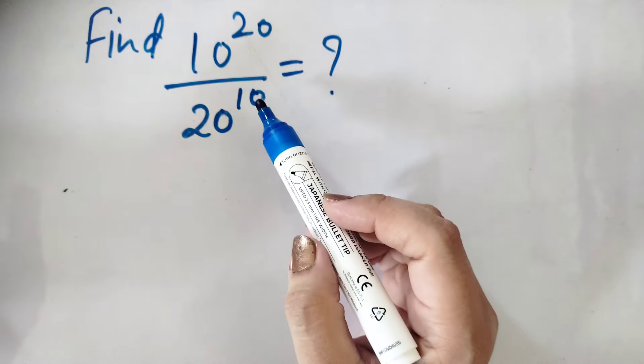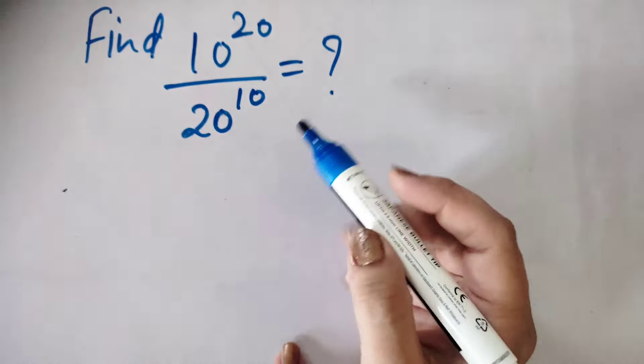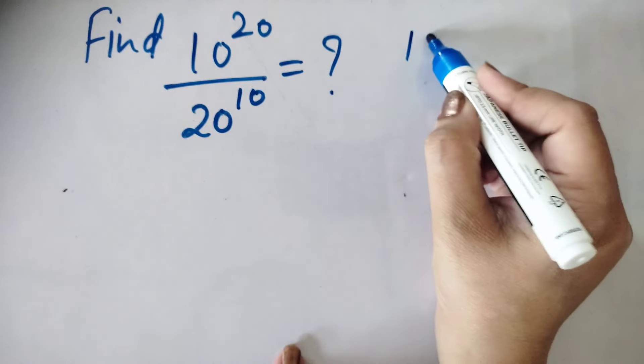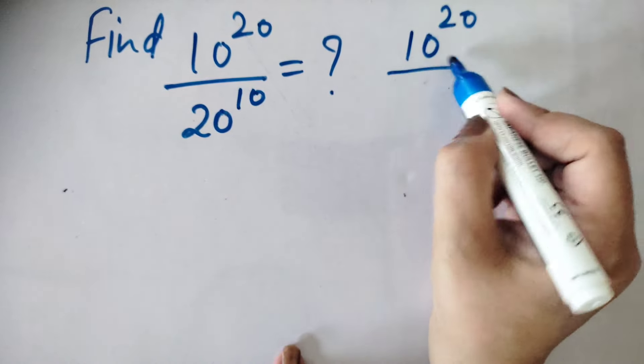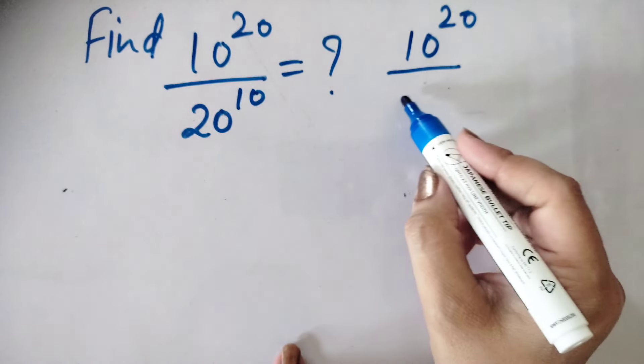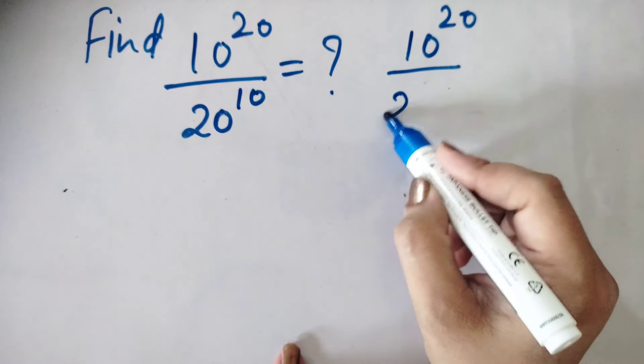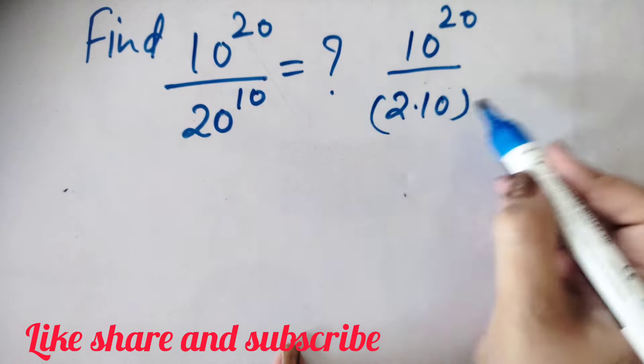They are in divide form. So how to find? First of all, you can see 10 power 20 we will write as it is and this 20 power 10, can we write this 20 power 10, 2 into 10 whole power 10.